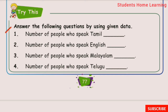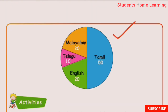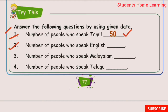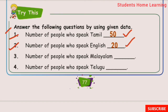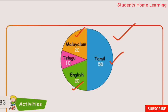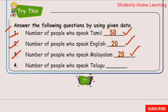Try this. Answer the following questions using the given data. Number of people who speak Tamil — Tamil is 15. Number of people who speak English — English is 20. Number of people who speak Malayalam — Malayalam is 20. Number of people who speak Telugu — Telugu is 10.